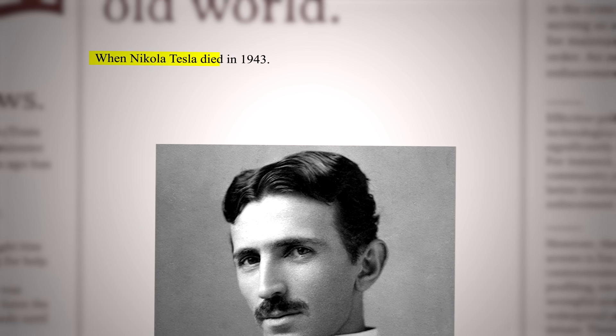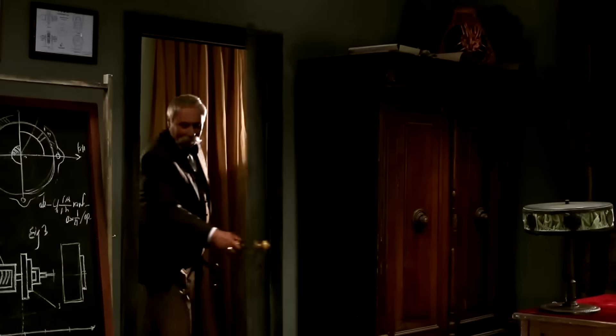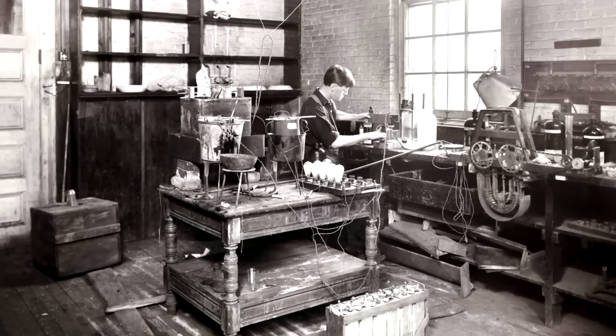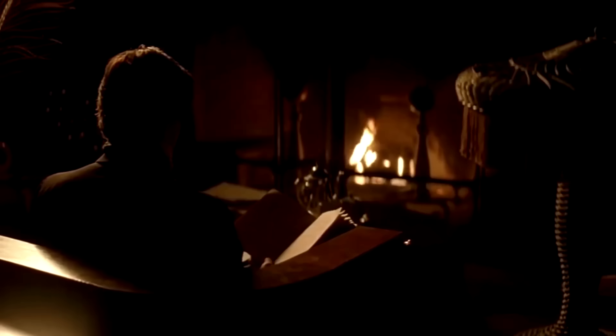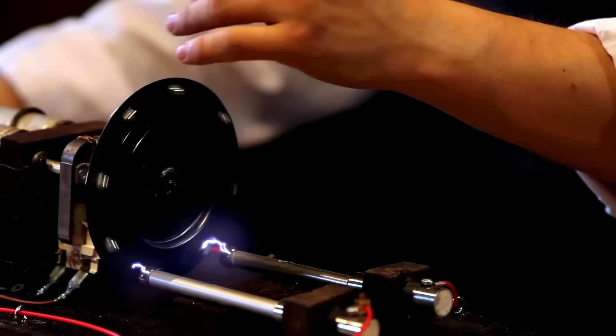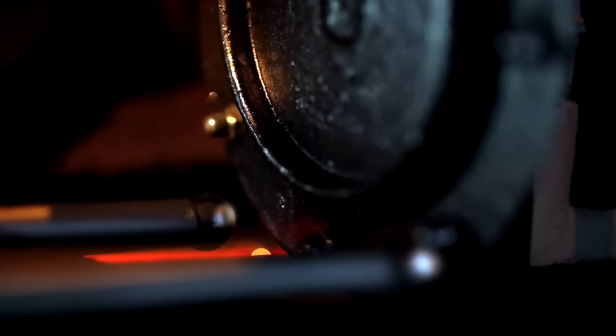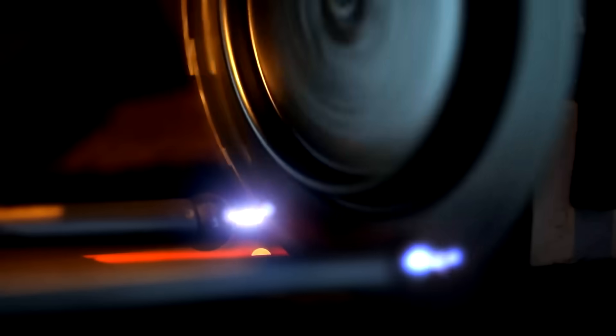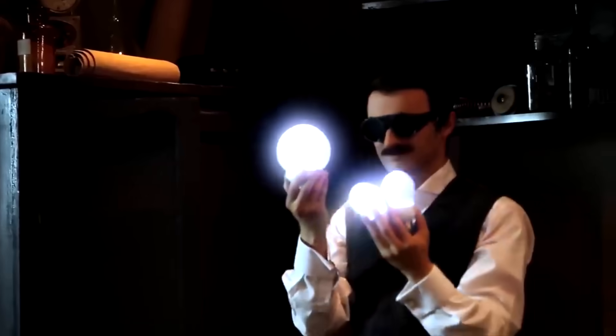When Nikola Tesla died in 1943, the government swooped in and seized everything from his hotel room. His nephew arrived to find technical documents already missing, including a black notebook marked 'Government' with hundreds of pages. These were the plans for what Tesla called his Death Ray, a particle beam weapon he claimed could end warfare forever. What happened to those plans, and why has a modern quantum computing project trying to reconstruct them just been mysteriously shut down?